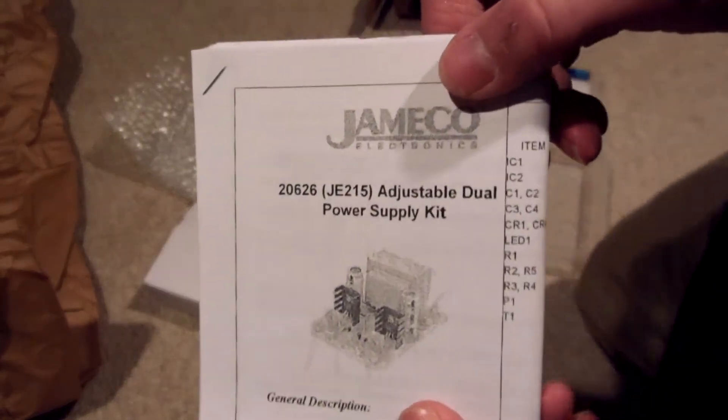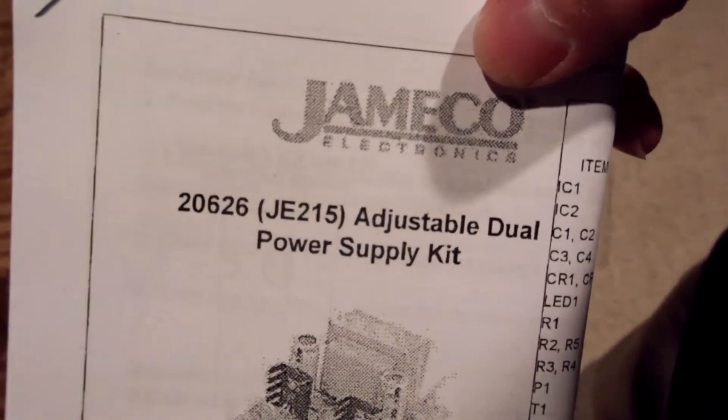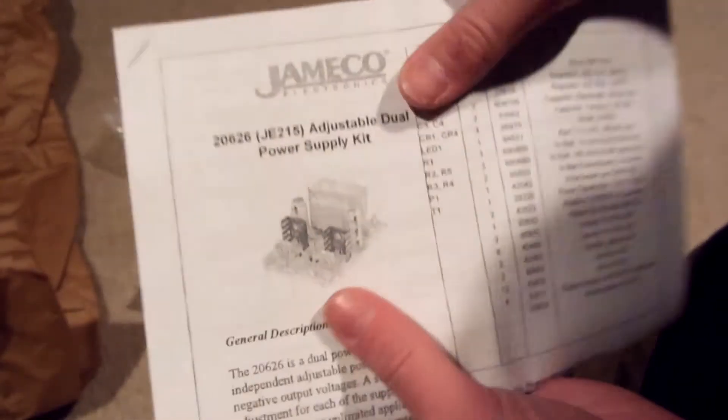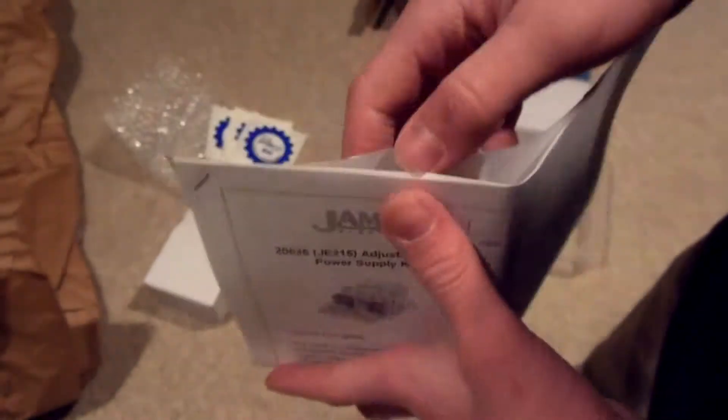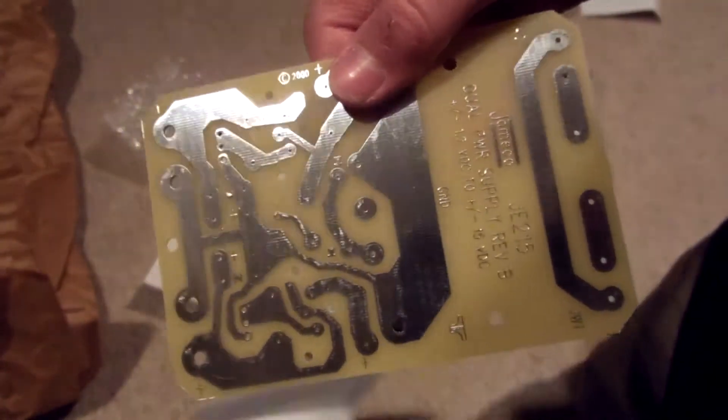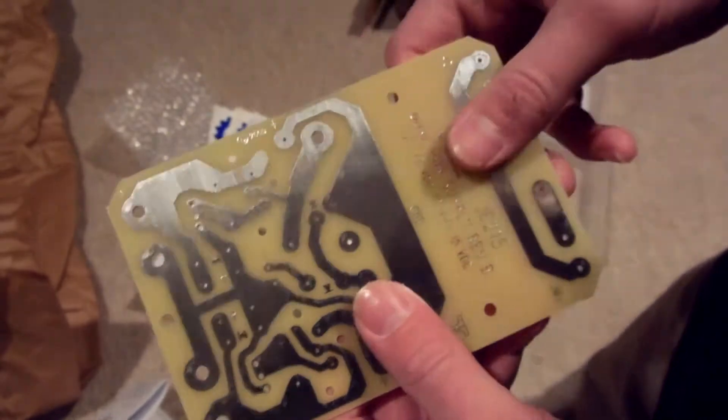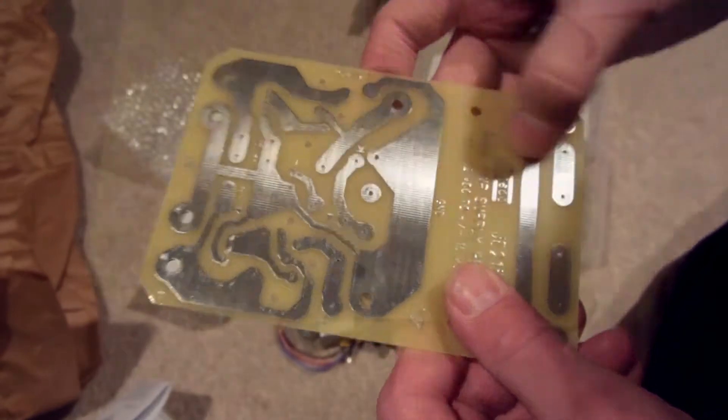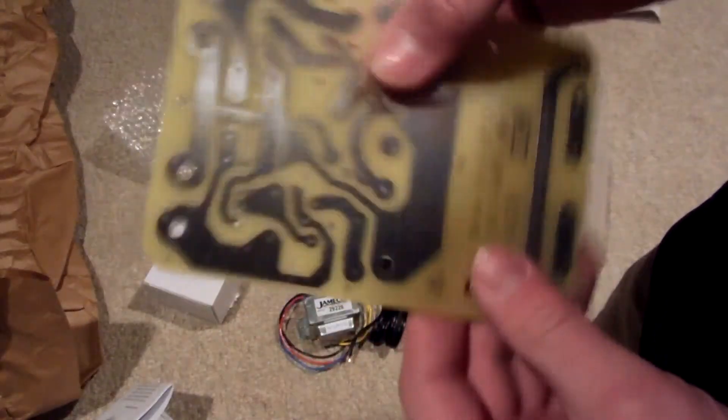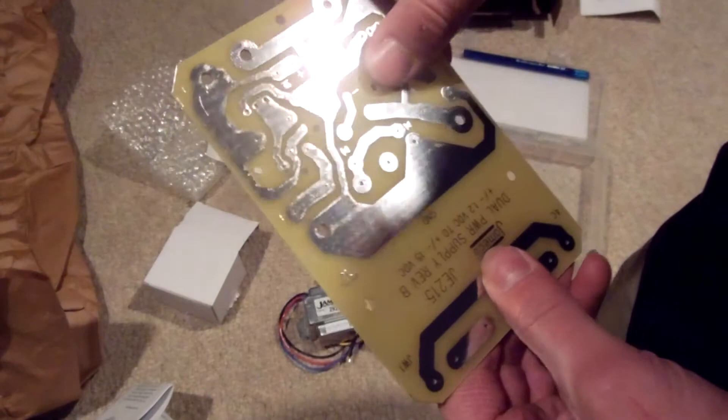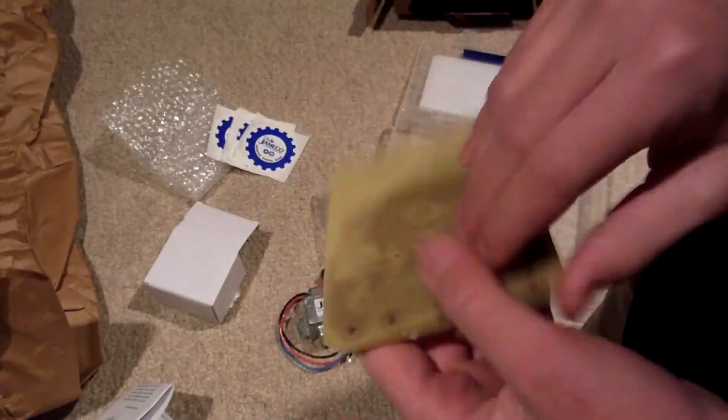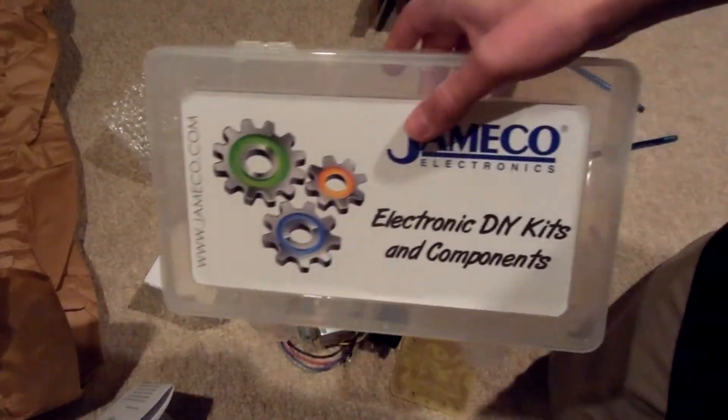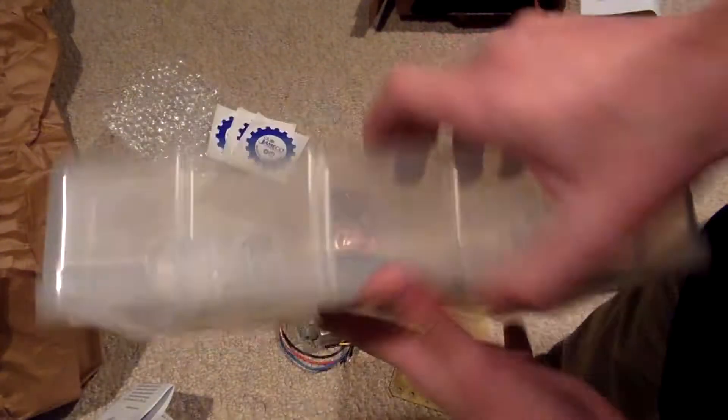So this kit is an adjustable dual power supply kit. The instructions are printed out on nice paper, easy to read. And in the instructions there's the PCB here. High quality PCB. Everything should hold together well on it. Nice plating here. All the holes are drilled nicely. It's a pretty nice board. That's what was in the box.